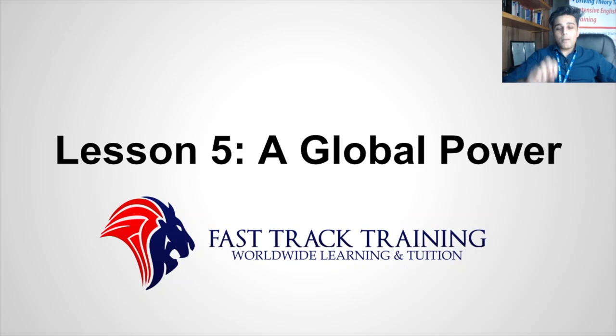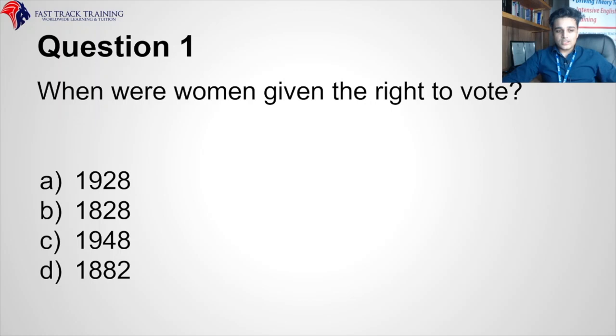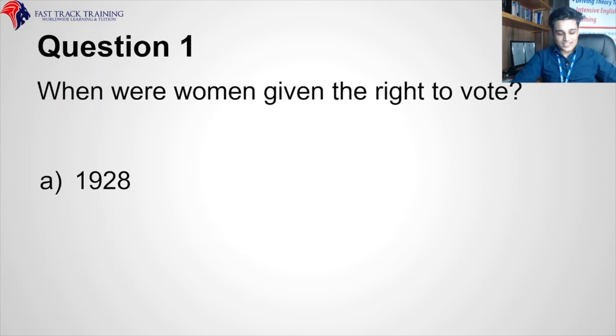Alright, ladies and gentlemen — Lesson Number Five: A Global Power, Part Two. Let's get straight into it. When were women given the right to vote? 1928, 1828, 1948, or 1882? The correct answer is 1928.